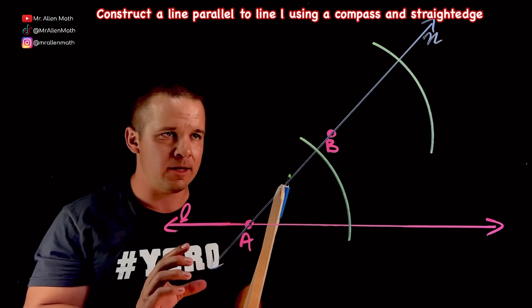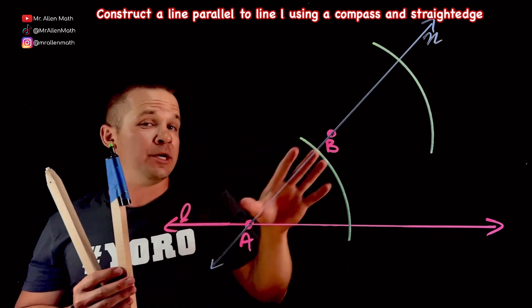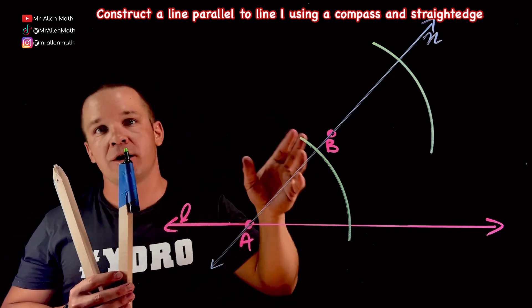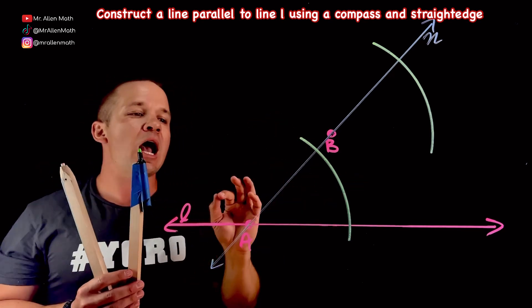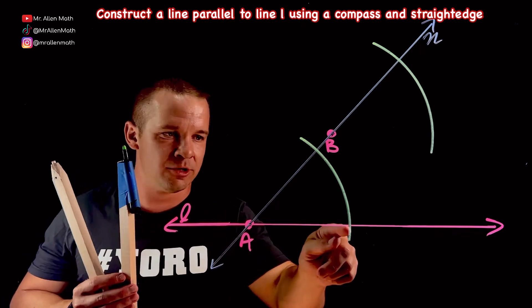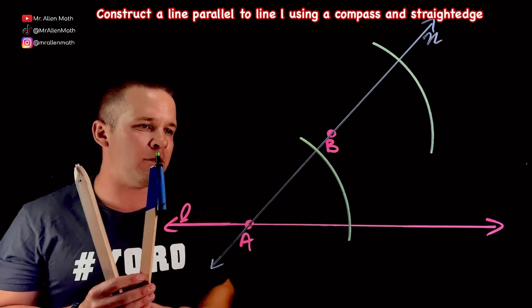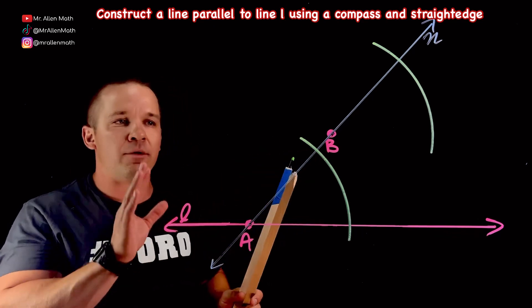Next thing here. Anytime I have these intersections of arcs, lines, lines and lines, arcs and lines, arcs and arcs, whatever it is, I create new points that I can then use. So this is a new point I can use, that's a new point I can use, that's a new point I can use. I'm not going to label them all. It's going to take a long time.